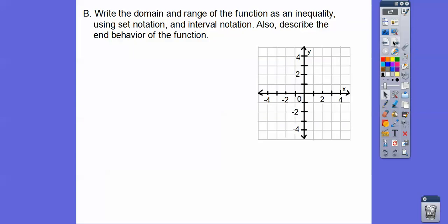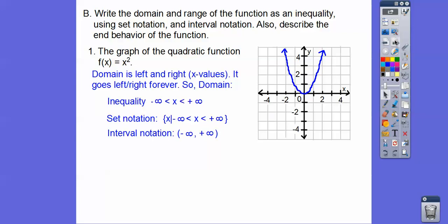So we're going to write the domain and range of a function as an inequality using set notation and interval notation as described in the first lesson. Here's a quadratic equation — a parabola. The domain: it goes to the right forever and to the left forever, so the domain is x between negative infinity and positive infinity. Remember, infinities never have equals bars on them — they have a parenthesis and not a bracket. Here it is in set notation: the set of x such that x is between negative infinity and positive infinity. In interval notation, this says the same thing.